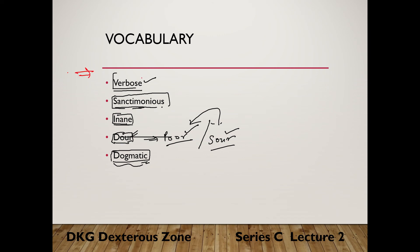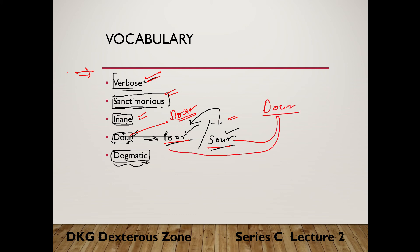These are the words we are going to deal with. First one is verbose, second is sanctimonious, third is inane, and fourth is D-O-U-R — dour — which can be pronounced as 'door' or 'dour', both ways are acceptable. And the fifth one is dogmatic.